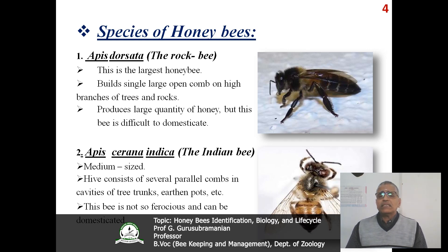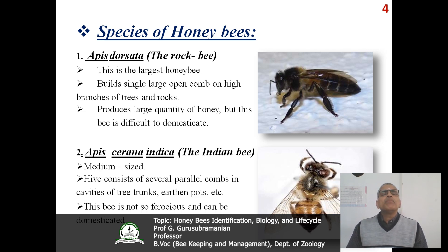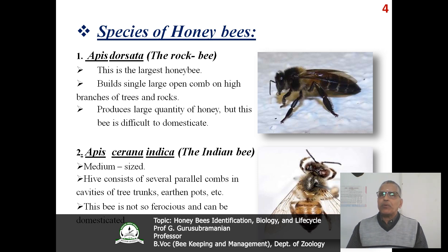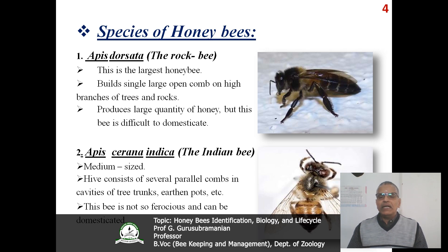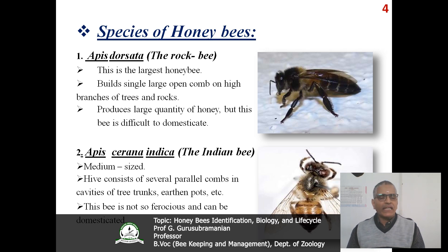The first species is the rock bee, scientific name Apis dorsata. This is the largest honeybee. It normally builds a single large open comb on high branches of trees and rocks. It produces a large quantity of honey, but it is very difficult to domesticate. The second species is Apis serena indica, otherwise known as the Indian bee. It is medium sized, and its hive consists of several parallel combs in cavities of tree trunks and earthen pots. This bee is not ferocious and it can be domesticated.